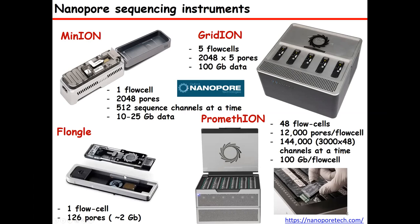Recently there is the Flongle, which is a testing instrument that has just 126 pores. For example, if you just don't want to waste your flow cell, you can use the Flongle to check your library quality. It's a one-time use device, so you can make sure that the library is really good and you will not waste your main flow cell. Sometimes a library is not good, so in that case it's really important to check first.